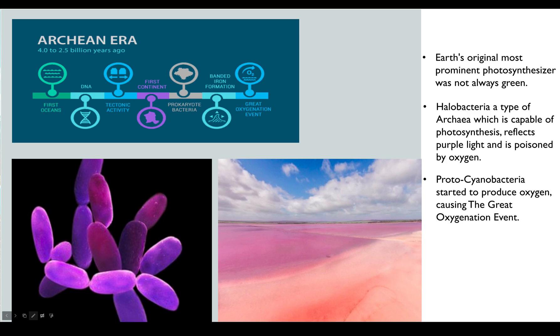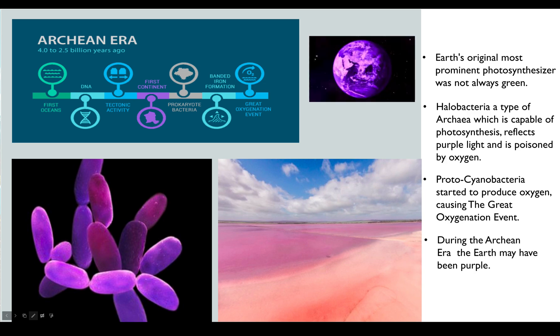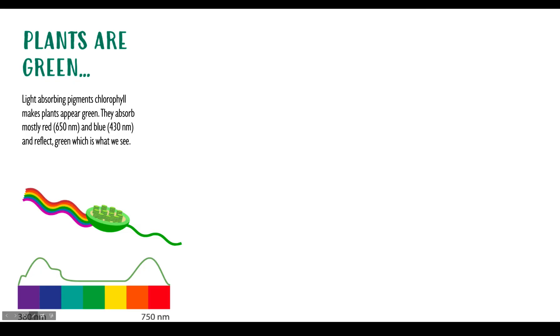Somewhere along the way, cyanobacteria started to become more successful on this planet and started emitting lots of oxygen. These plumes of oxygen started to kill the archaeans. It's kind of interesting to think that if cyanobacteria had never come on the scene, our planet may actually be purple instead of green on land.